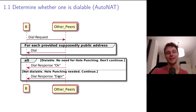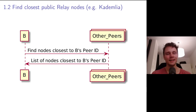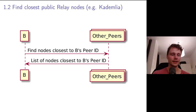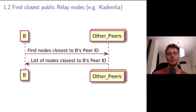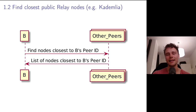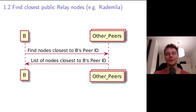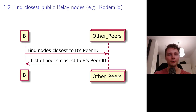Step 1.2: since B is not dialable, it needs to find some relay nodes. This is not fully defined in Project Flare yet in the sense that each upper-layer user of libp2p can do it their own way. What B does in IPFS is search the Kademlia DHT — you can see that as a black box for now — to find the closest public nodes that also offer the relay protocol, and then move on to the next step.